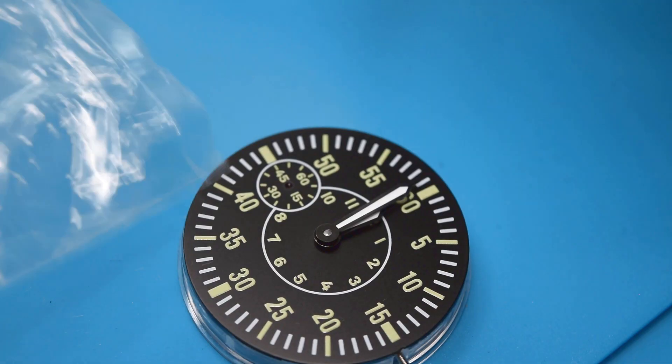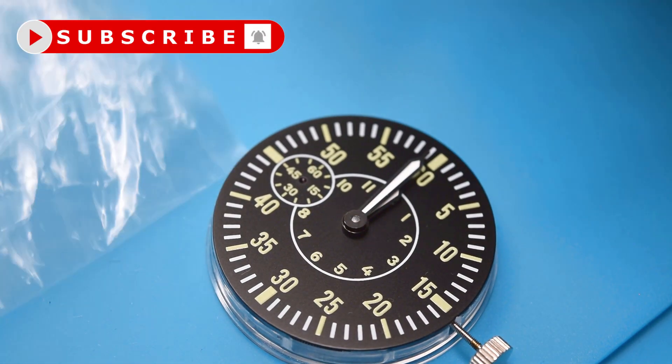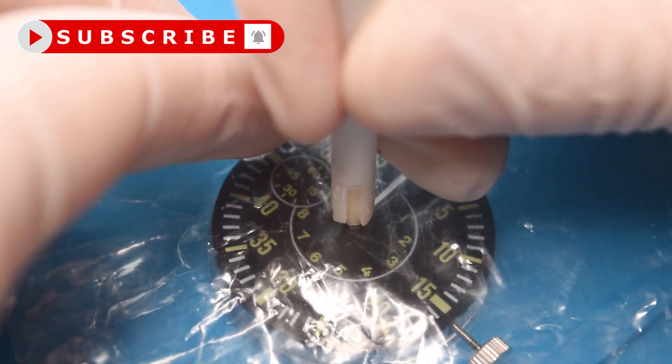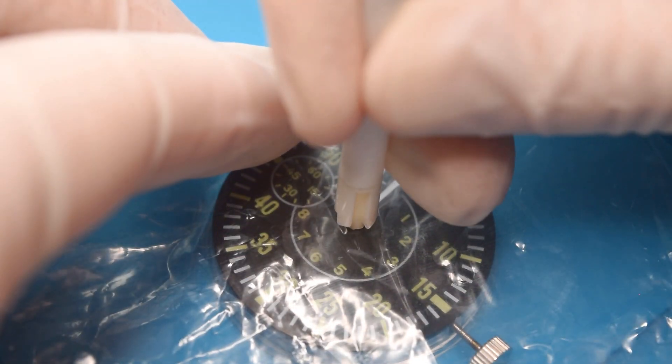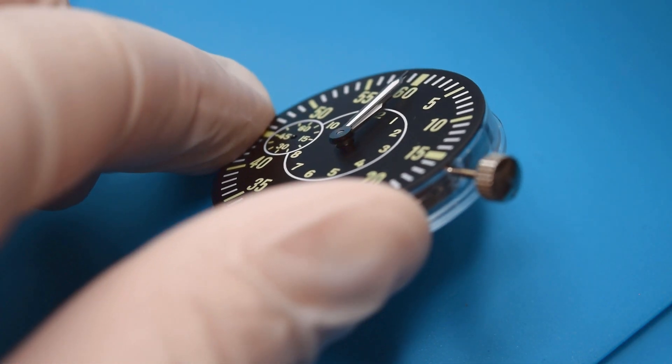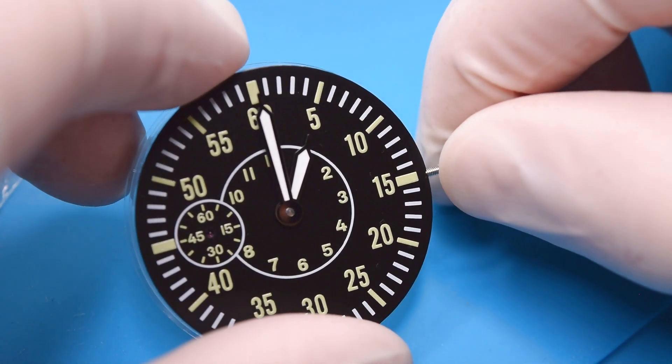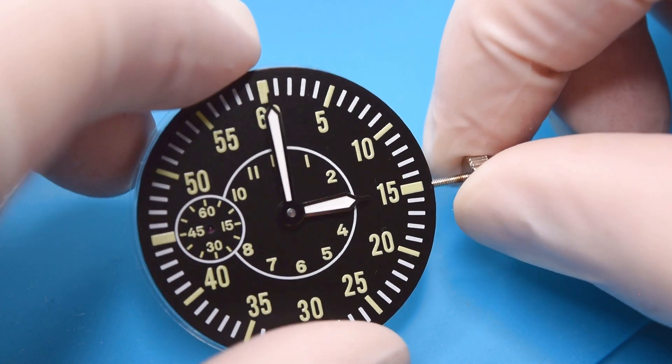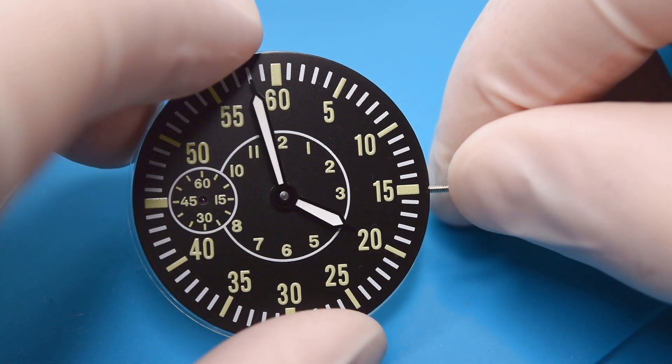And now I have to check the alignment of the hands if they are parallel to themselves and to the dial. I think they are. Now quick check if the hour hand is on the right place when the minute hand shows 12 o'clock. I think it is.